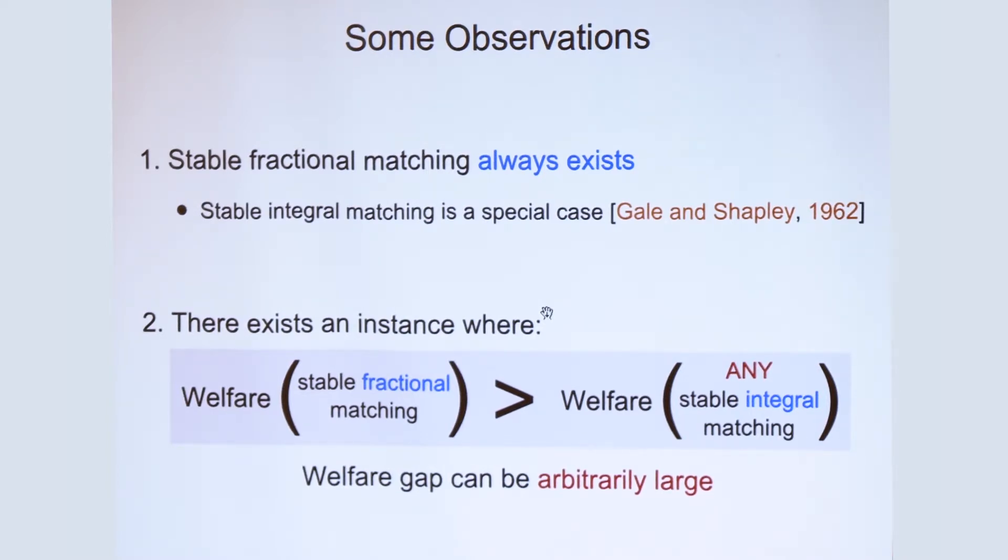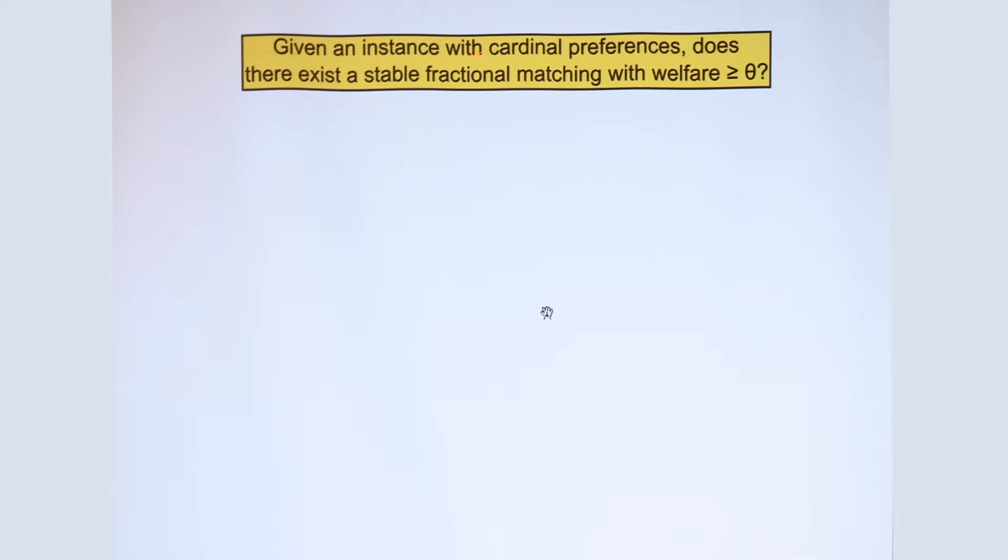So given the fact that stable fractional matchings really give us significant advantage in terms of welfare, we have a natural computational question at hand, which is, how do you find optimal stable fractional matching? So more specifically, given an instance with cardinal preferences, does there exist a stable fractional matching with at least a certain amount of welfare? And that's the central computational problem in our work.